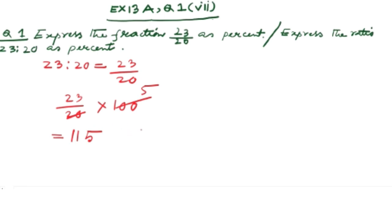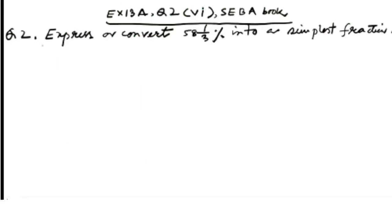Question number 2: Express or convert 58 and 1 by 3 percent into a simplest fraction. This question is just reverse of question 1. Here percent ko fraction mein convert karna hai. While converting fraction to percent we multiply with 100, and for converting percent to fraction we divide by 100. So here we will divide by 100, just opposite operation of previous sum.